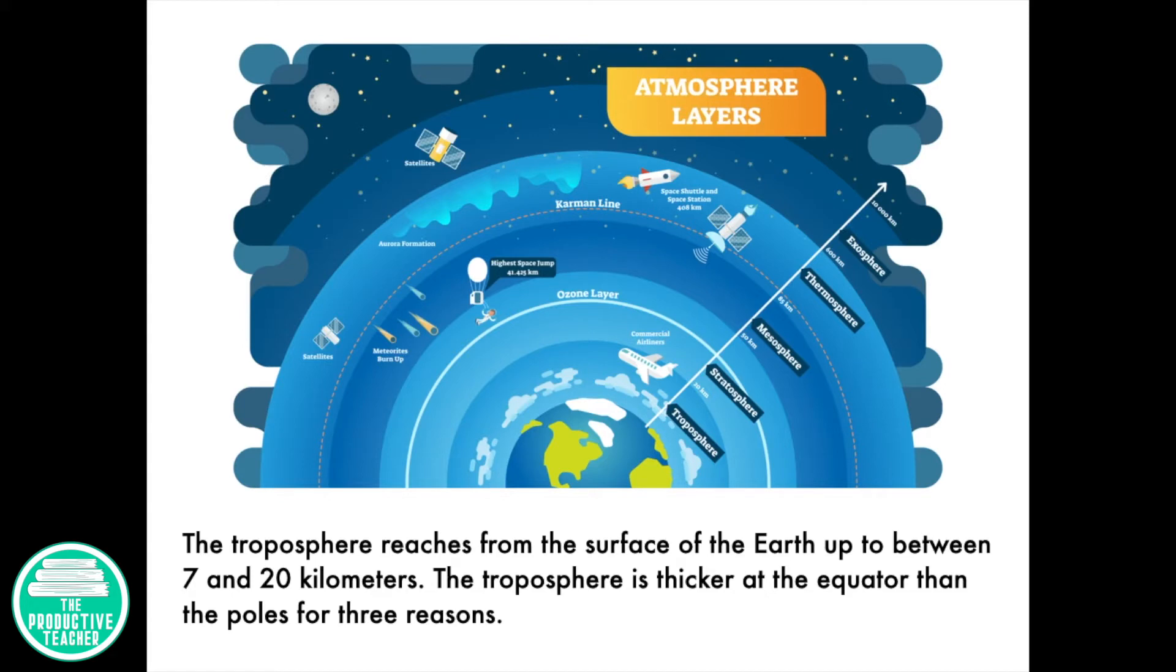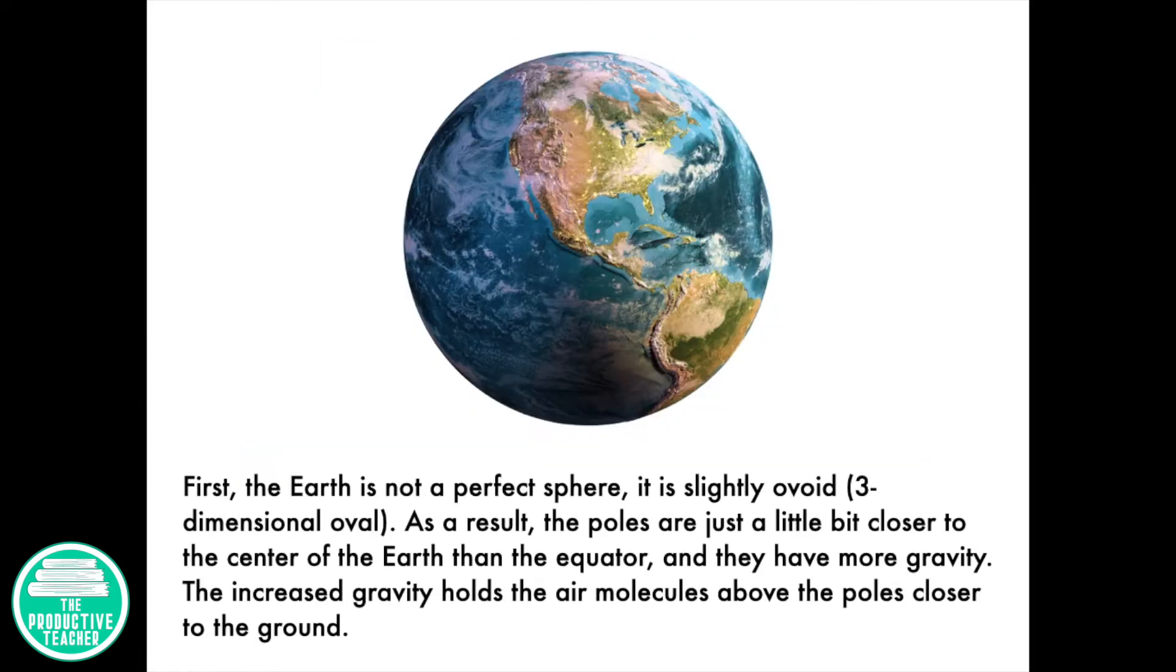The troposphere is thicker at the equator than the poles for three reasons. First, the Earth is not a perfect sphere. It's slightly ovoid, a three-dimensional oval.